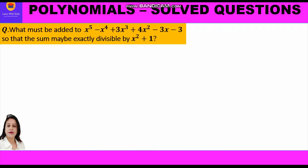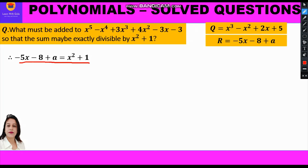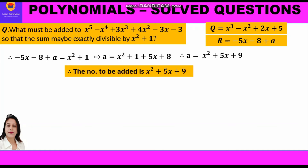According to the question, we added term a so the dividend is exactly divisible by x² + 1. Since the remainder is -5x - 8 + a, we need this to equal zero — or equivalently, equate -5x - 8 + a = x² + 1. Transposing: a = x² + 1 + 5x + 8, and since 1 + 8 = 9, we get a = x² + 5x + 9.